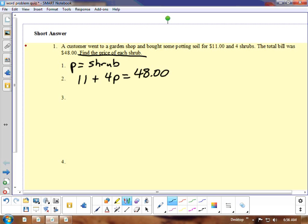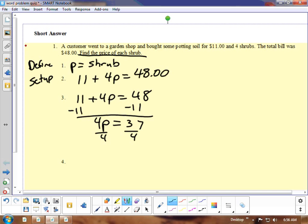So you're going to use the Finney 5 for this. I've defined my variable. I have my setup. Now we need to solve. We're going to take this and solve it and we're going to subtract 11 from each side and divide by 4. We get $9.25. So P equals $9.25.